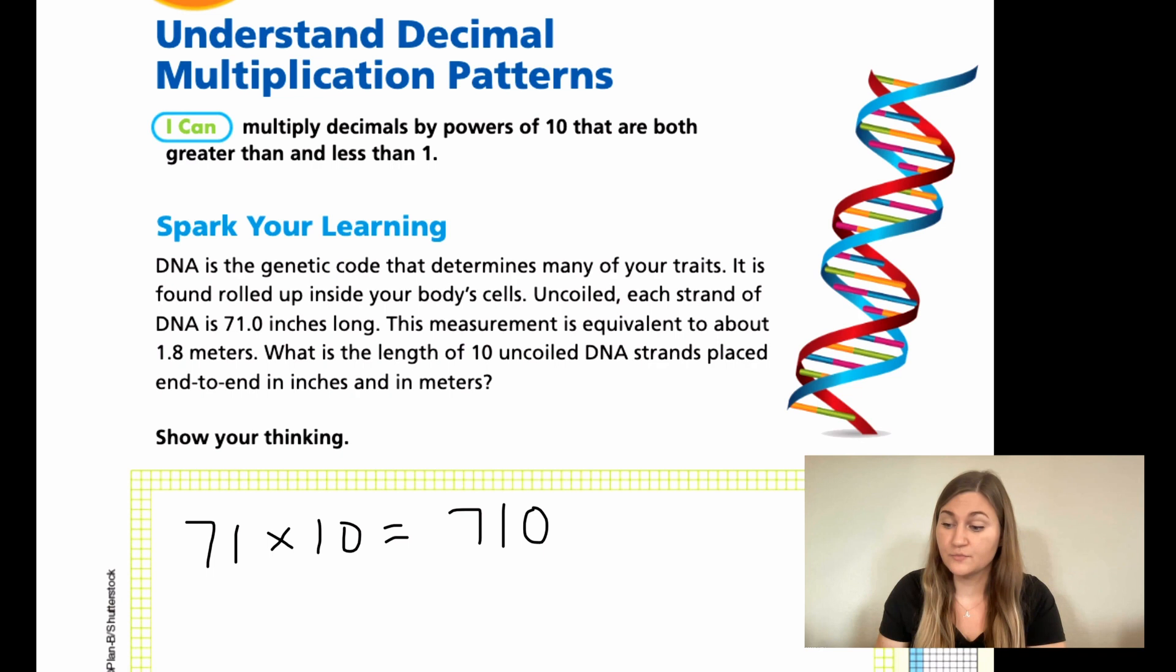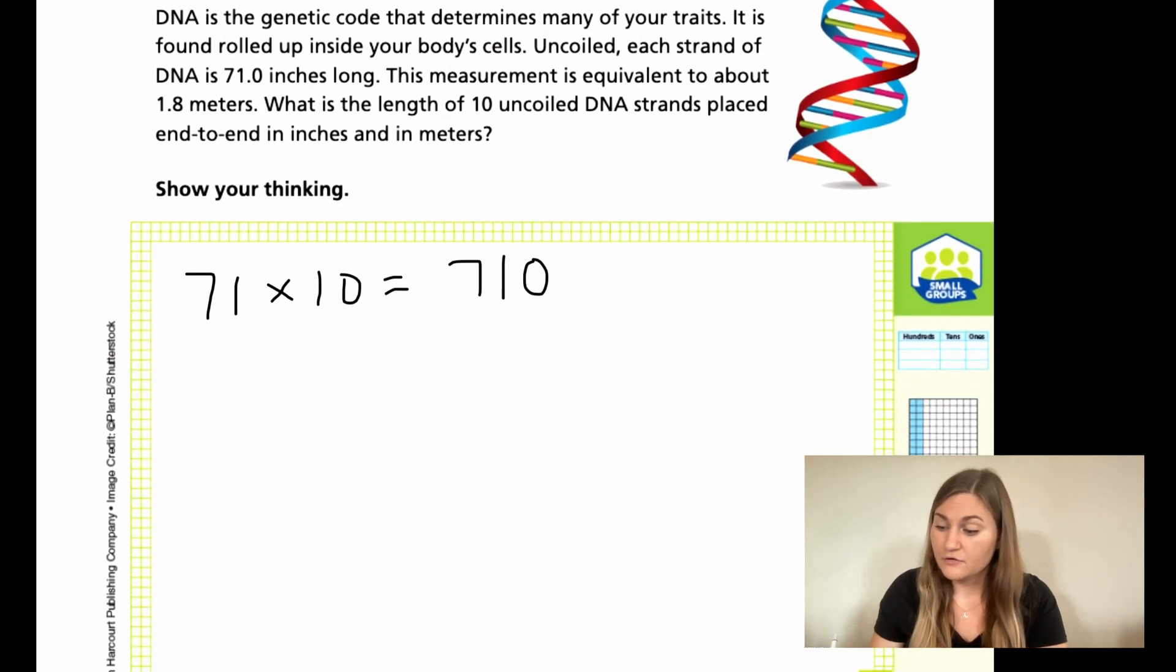I'm going to show you how else this is true because technically they give us a decimal. So right underneath it, I'm going to do 71.0, multiplied by 10. For a decimal, the trick right off the bat is you are going to move the decimal to the right. You're going to hop the decimal over to the right so that it's now right there.